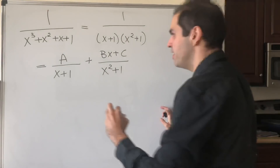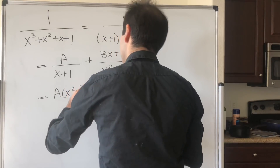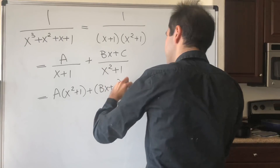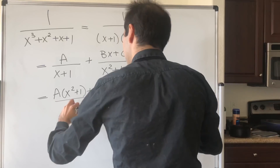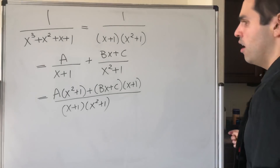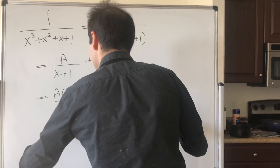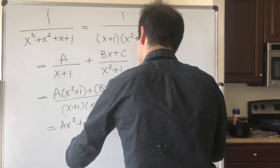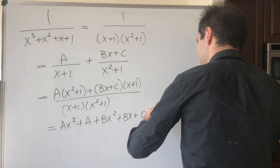Then let's put it on the common denominator. This becomes A times x squared plus 1, plus Bx plus C times x plus 1, over x plus 1 times x squared plus 1. And then you can expand out the numerator as Ax squared plus A plus Bx squared plus Bx plus Cx plus C.